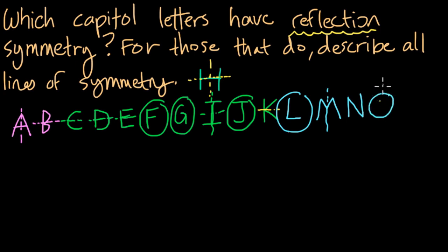O is a fun one. Because it's a circle, we have infinite lines of symmetry. We can draw lines anywhere here, right? Anywhere we draw a line, we could fold this shape in half.